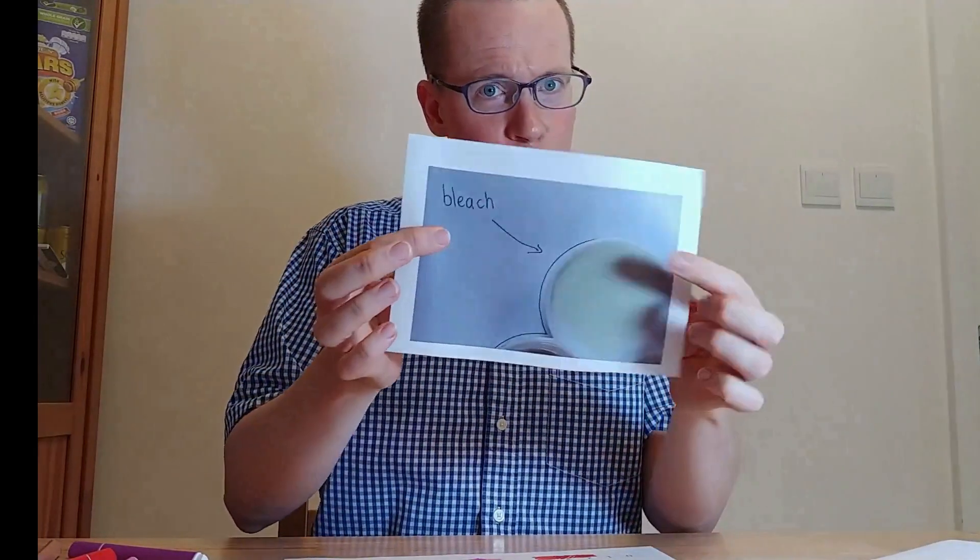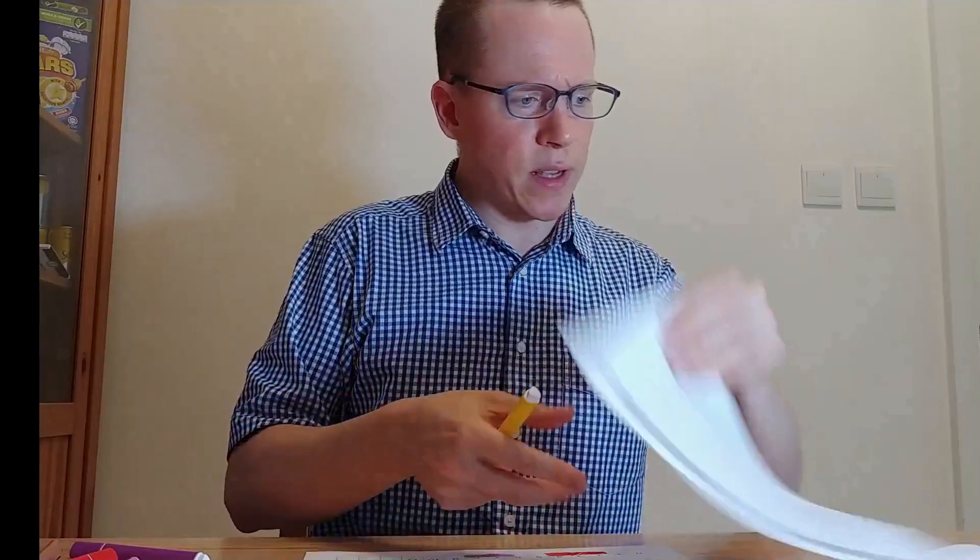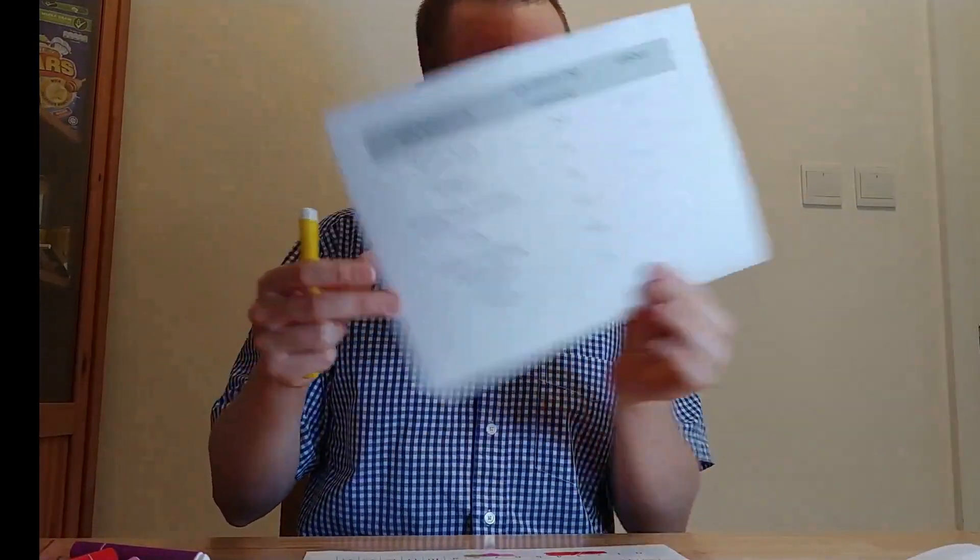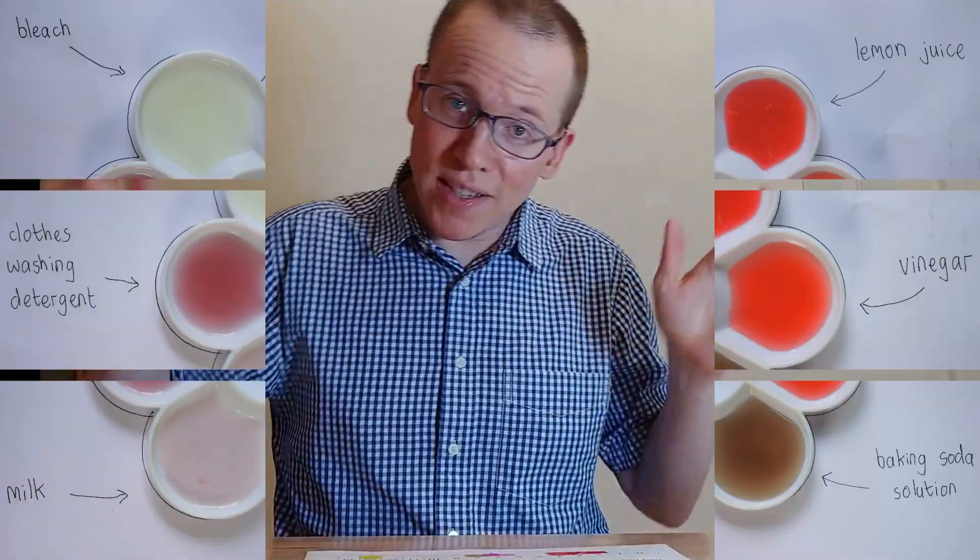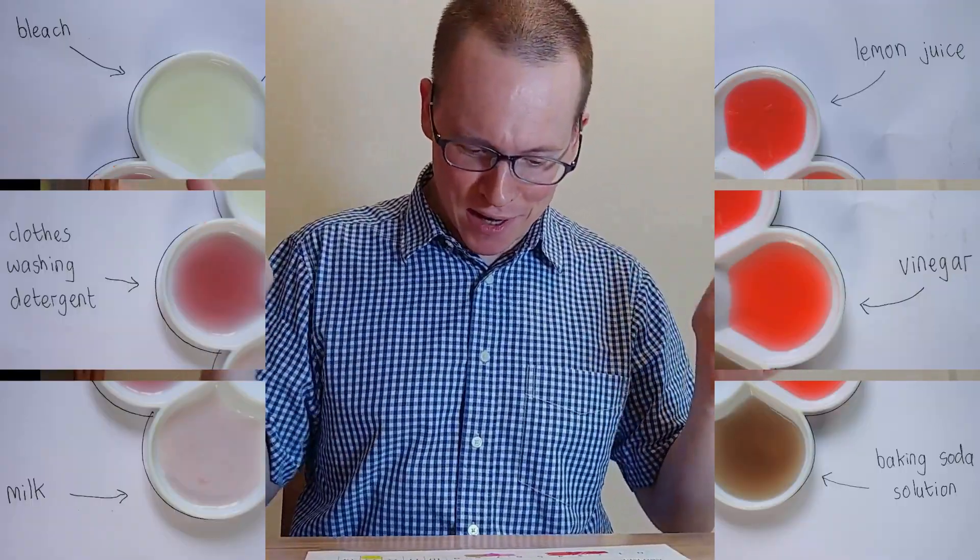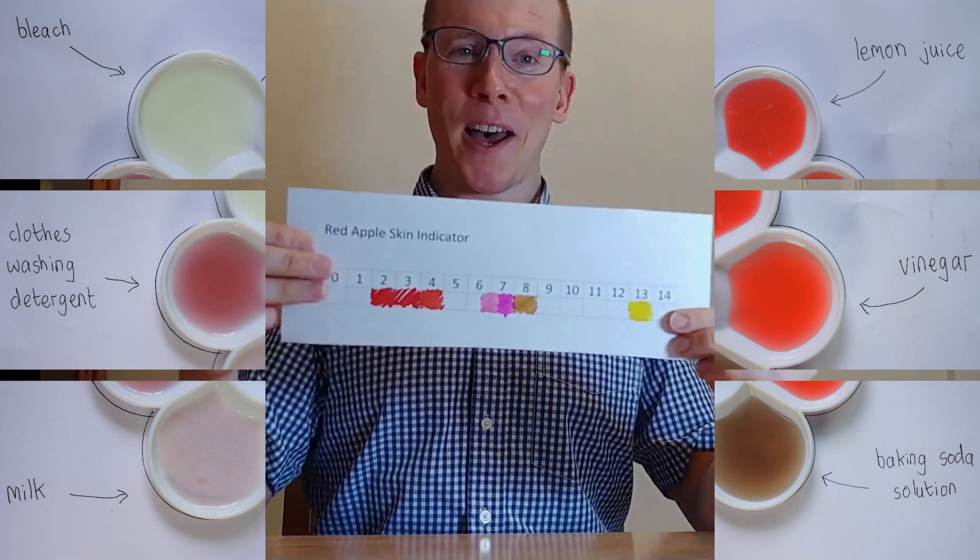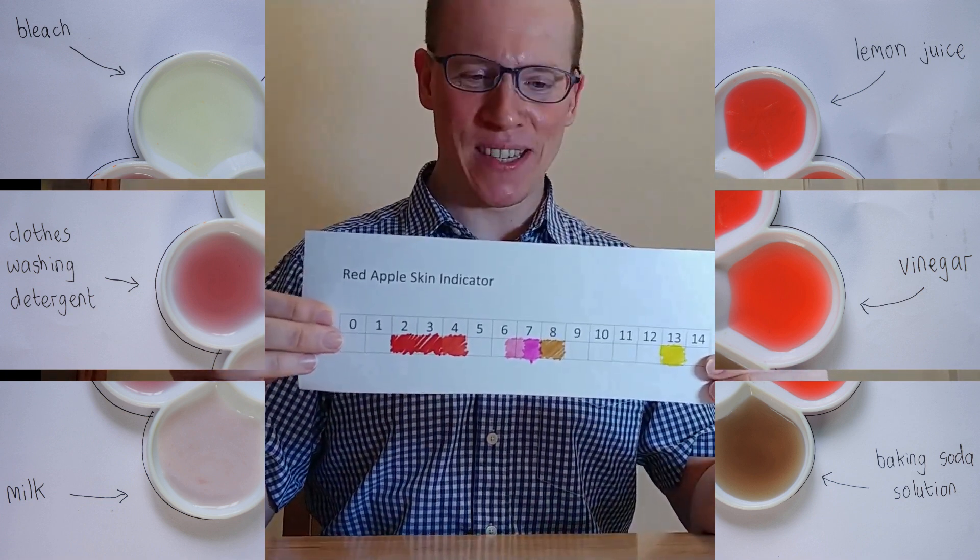And then finally we've got the bleach, which is really a little yellow, brown. I'm just going to go with yellow actually. According to my table it's pH 13. And so according to the results that I've done, that I've got, this is my pH chart that I can use.